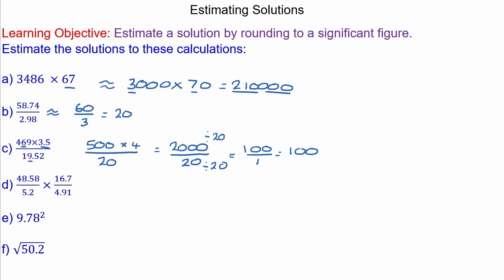For question D, 48.58 becomes 50 over 5, times 16.7 which is rounded to 20 over 4.91 which is rounded to 5. 50 divided by 5 is 10, times 20 divided by 5 which is 4. So that comes out as 40.